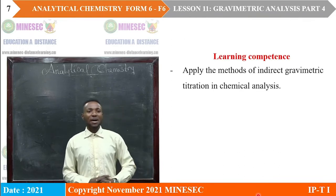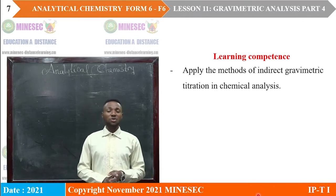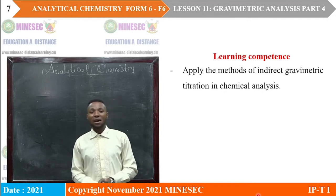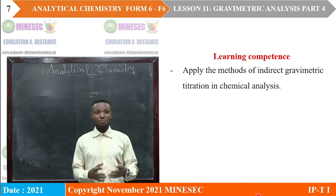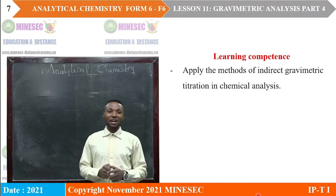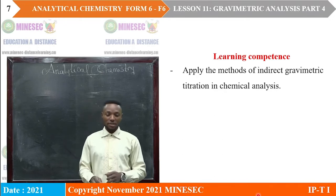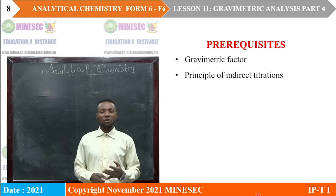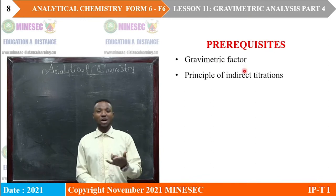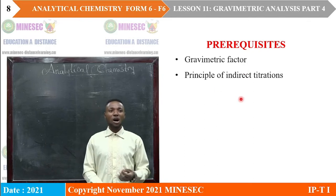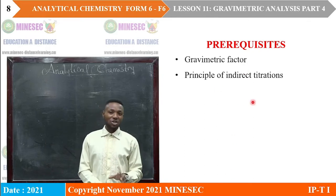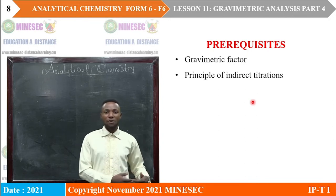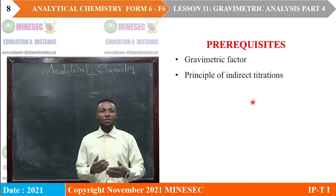Learning competencies: by the end of this lesson, my dear learners, you are supposed to be able to apply the method of indirect gravimetric titration in chemical analysis. As prerequisites, you are supposed to have a good mastery of number 1, the gravimetric factor, which we have seen, and the principle of indirect titration that you saw in the previous class in Form 5.